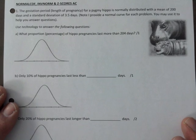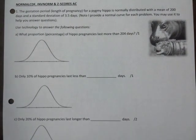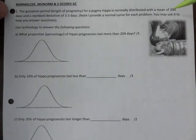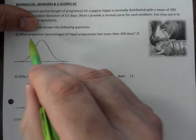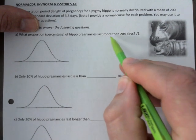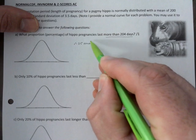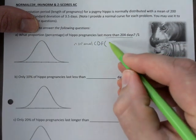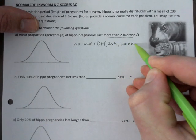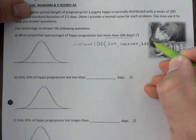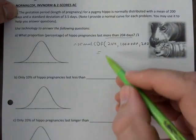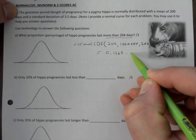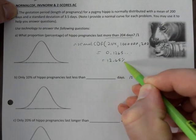Alright, the gestation period, length of pregnancy of the hippo is normally distributed with a mean of 200 and standard deviation of 3.5. Use technology to answer the following questions. What proportion or percentage of pregnancies last more than 204 days? I would expect you to show me this in normal CDF, and then you would go 204 and here you just put in a really big number, and this would be 203.5. Once you do that you get 0.1265 and something, so that would be 12.65% of pregnancies.